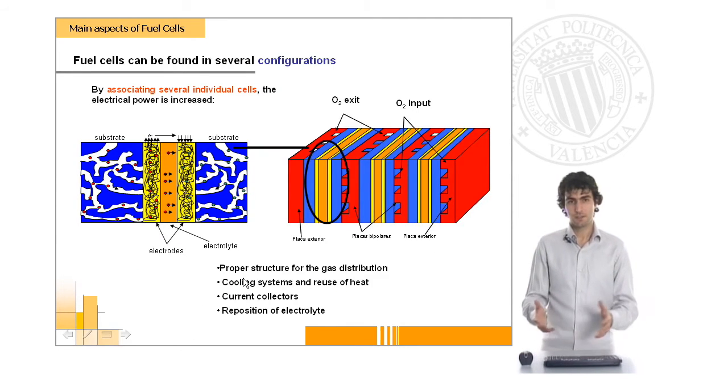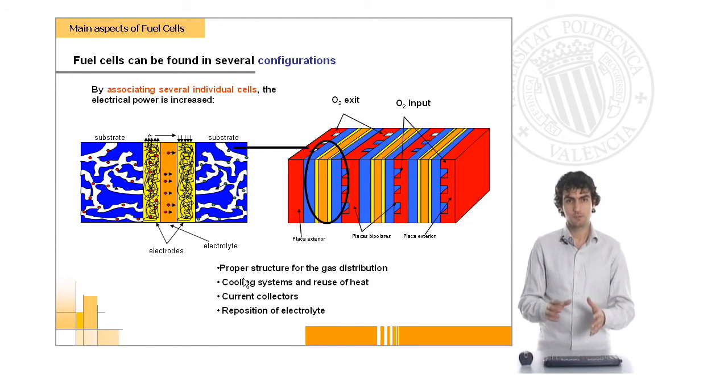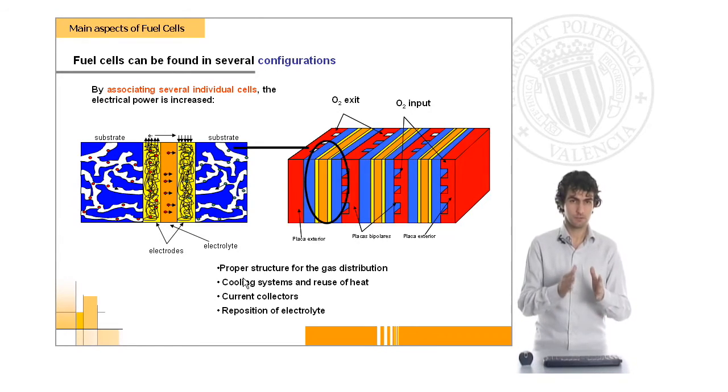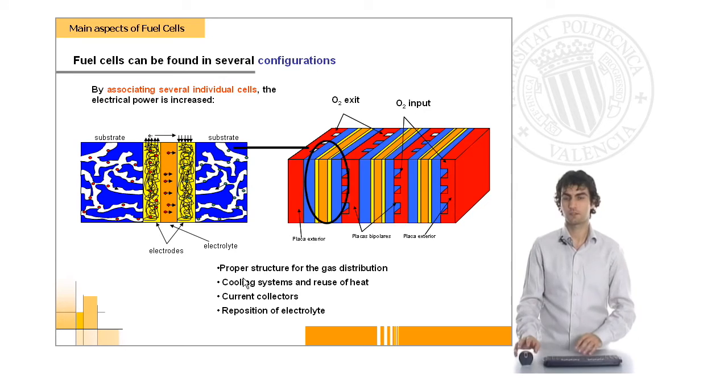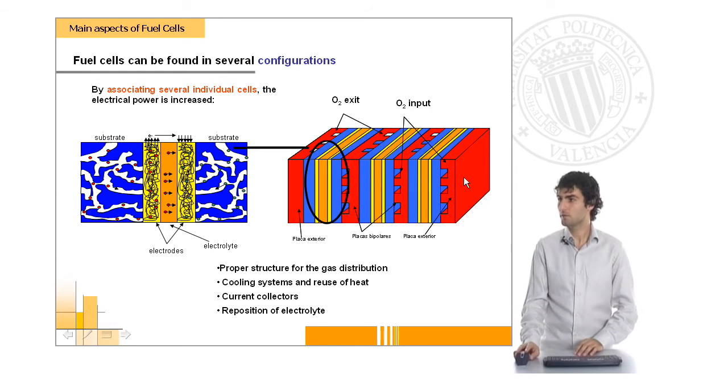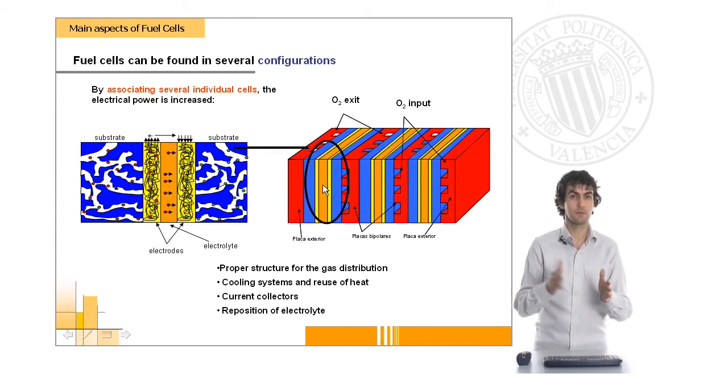In general terms, a fuel cell, an individual cell, will give very small values of power. Therefore, we will need to use several cells so that we can increase the energy that we obtain. This is a very typical configuration of what is called a stack, using several collector plates and individual cells, usually in parallel.